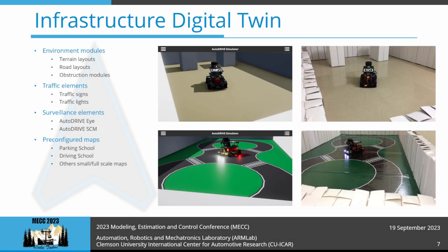Autodrive provides a modular and reconfigurable infrastructure development kit which enables swift design and construction of customized driving scenarios. This includes static environment modules, active and passive traffic elements, surveillance elements, as well as several pre-configured maps. At each time step, the simulator conducts mesh-mesh interference detection and computes contact forces, frictional forces, momentum transfer, as well as linear and angular drag acting on all rigid bodies in the scene. This realistically simulates vehicle-vehicle, vehicle-environment, and vehicle-infrastructure interactions.